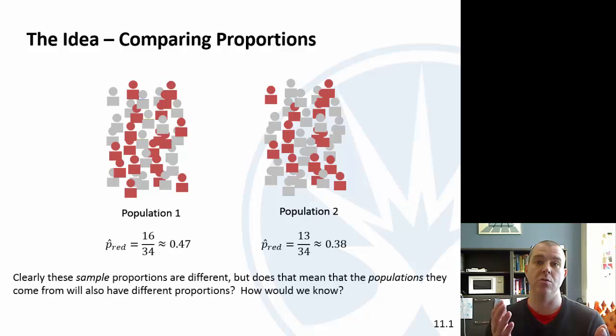Clearly these two sample proportions are different, but the question is are they different enough for us to say that the populations they come from have a different proportion who are red? So that's the issue. Even if there's a difference, is that difference big enough for us to say that the populations are actually different?